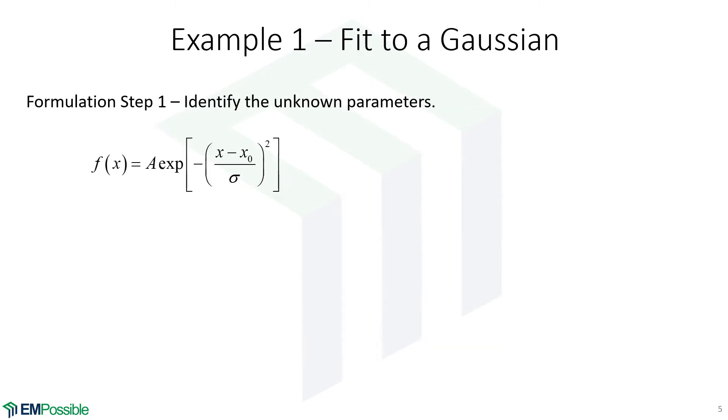Step one here in the formulation is identify the unknown parameters. What are the coefficients that define our curve fit? Well, in this case, it's A the amplitude, X0 the offset, and sigma the width of our Gaussian. So our column vector containing our curve fit parameters will contain our A, X0, and sigma.